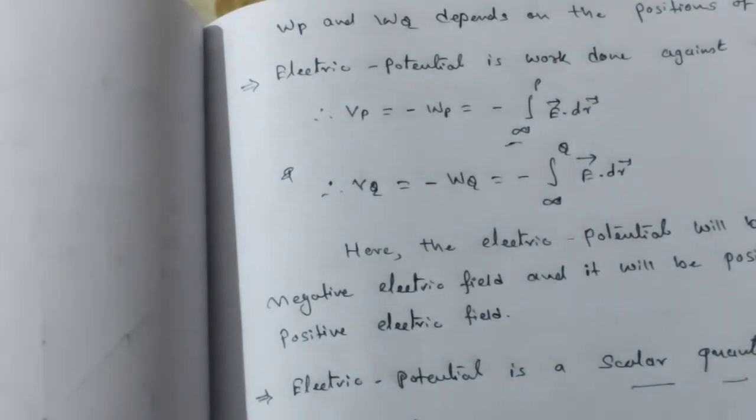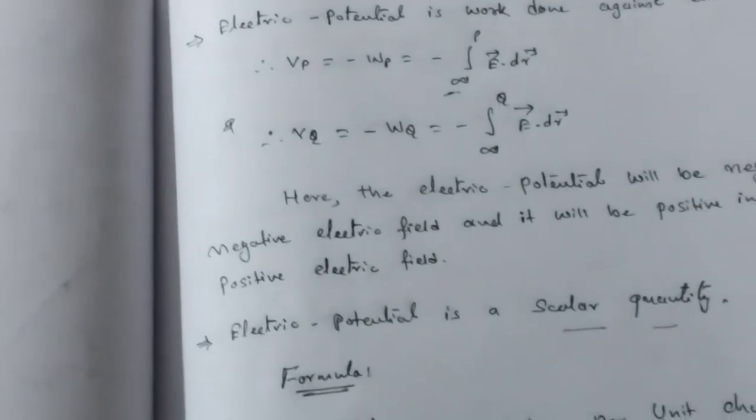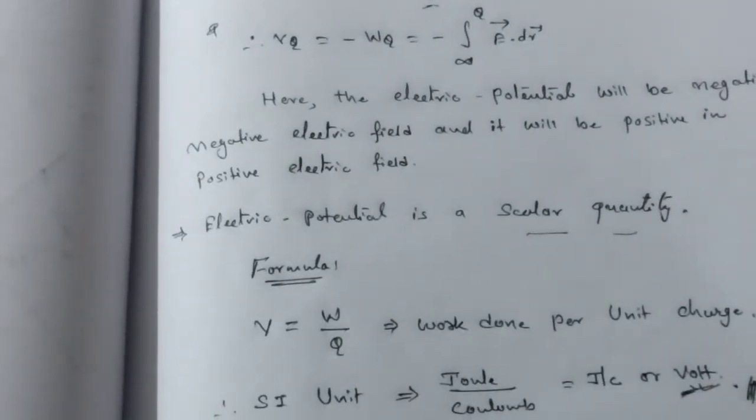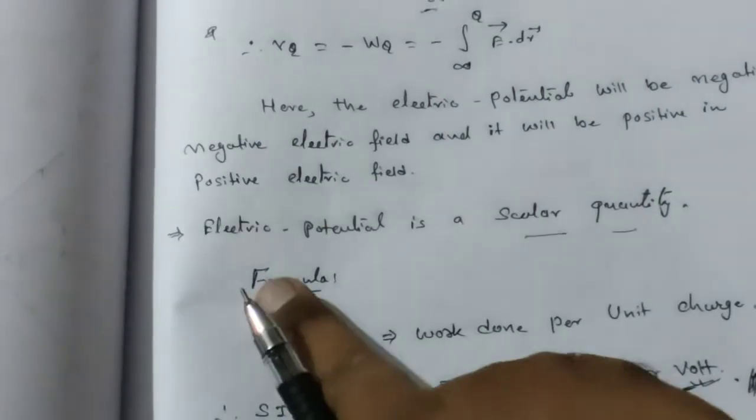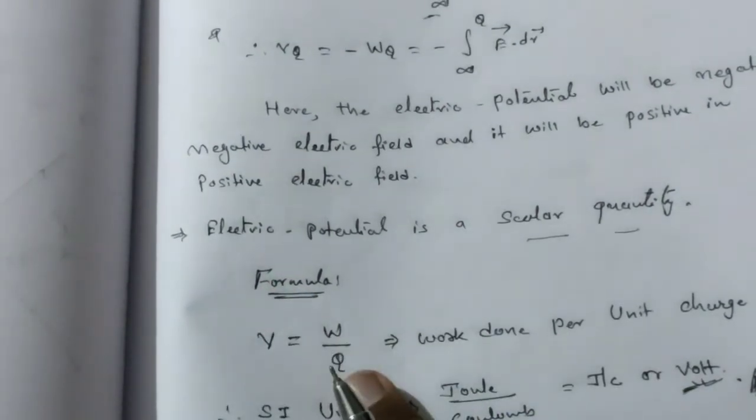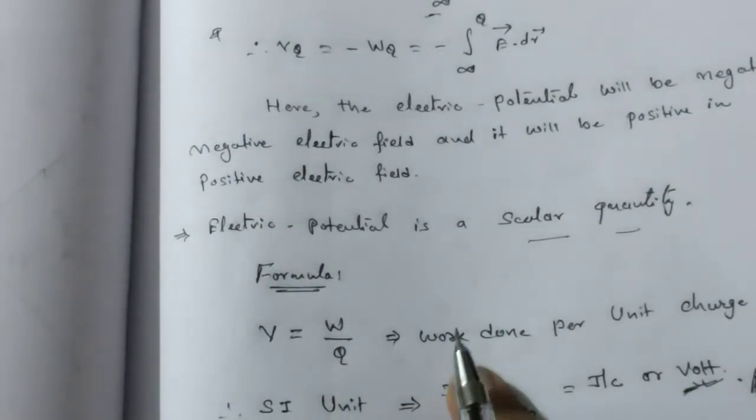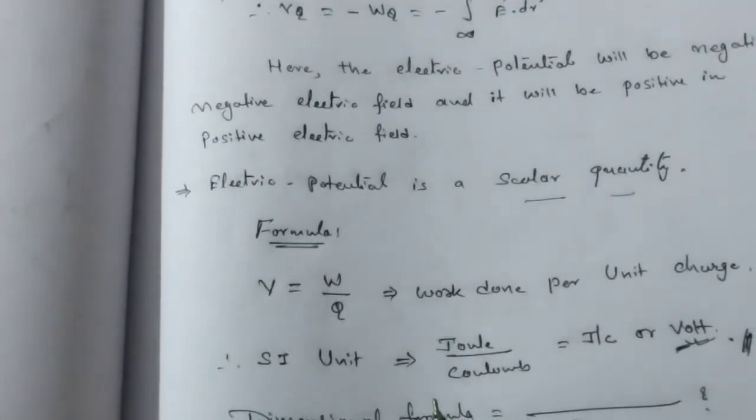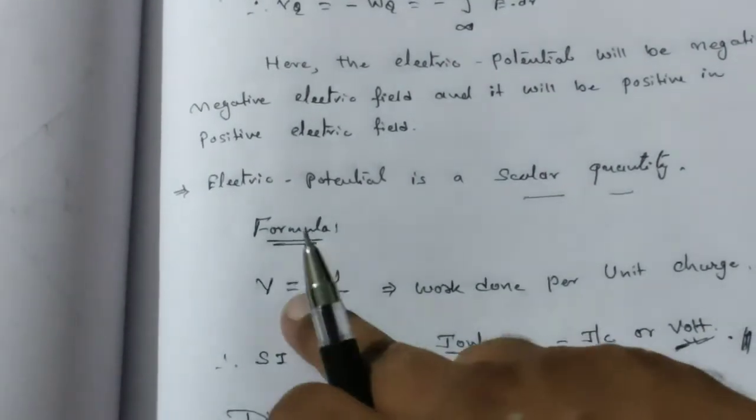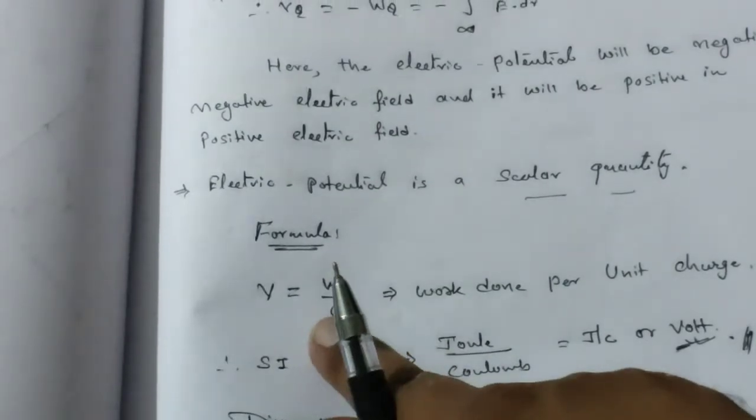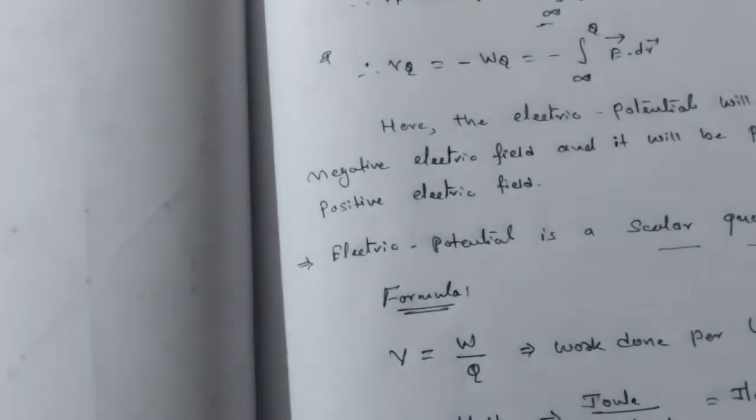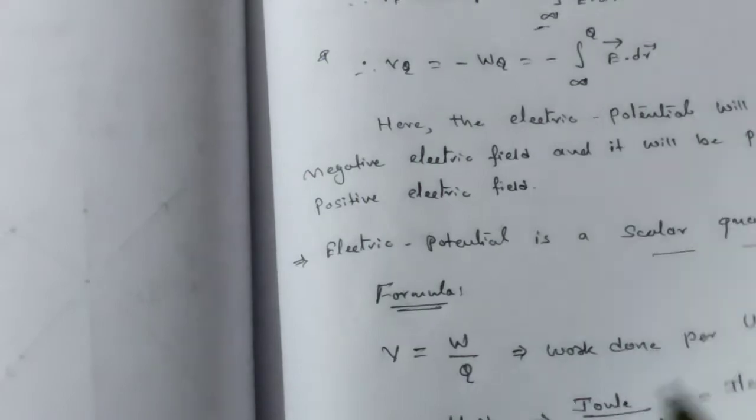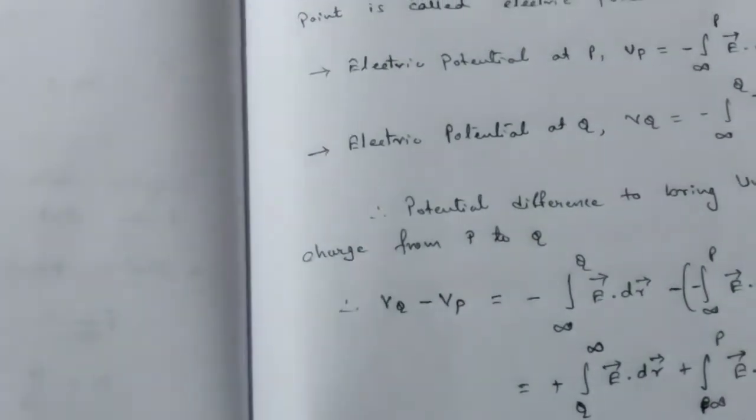Here dot stands for dot product because it is a scalar quantity. The basic equation for electrostatic potential is work done per unit charge, and its SI unit is joule per coulomb.